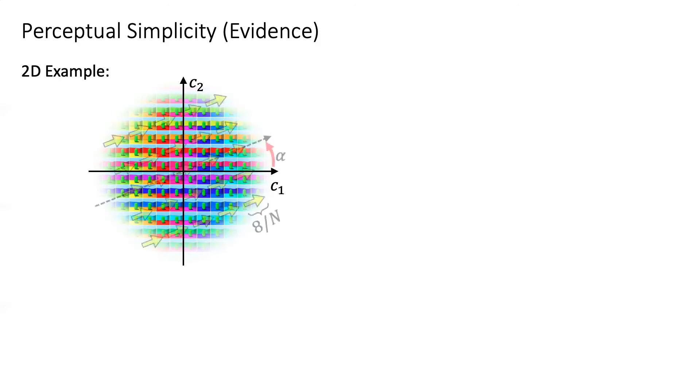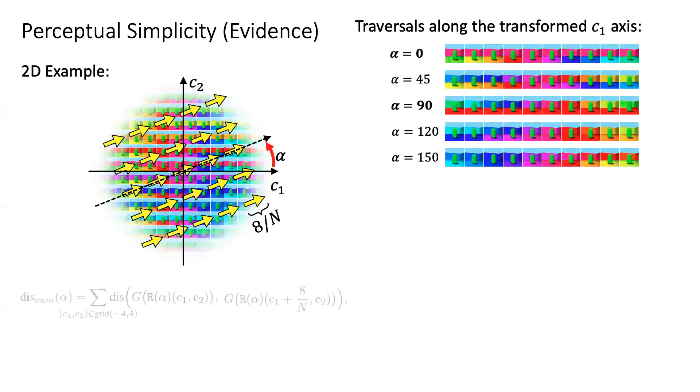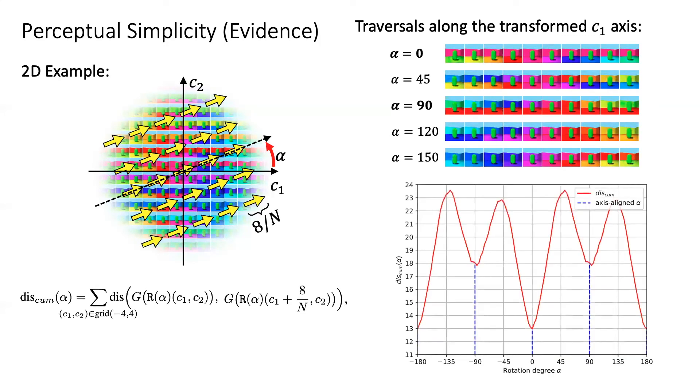We quantize the traversal by dividing the path into multiple segments and we use the perceptual distance function to compute accumulated perceptual change along a latent direction as shown by the yellow arrow in this picture.